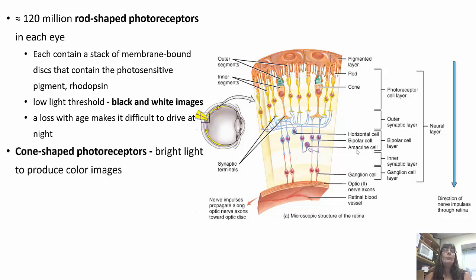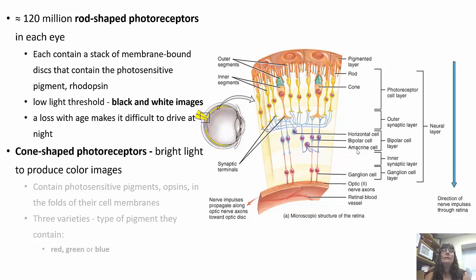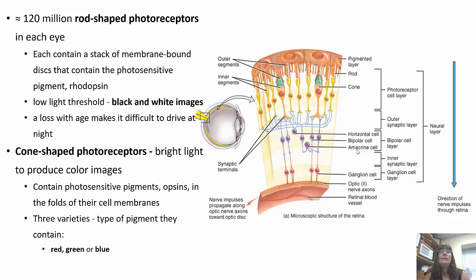Cone-shaped photoreceptors are for bright light and color images. They have opsins instead of rhodopsin as their photosensitive pigments. There are three varieties based on the type of pigment they contain: red, green, and blue.